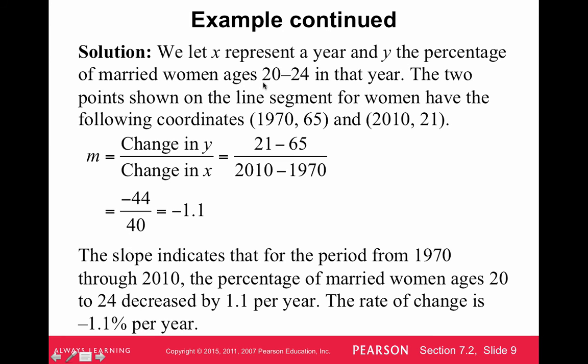So we're going to do the classic formula, y2 minus y1. So here are two points. We have y2, which is 21 minus 65 over x2 minus x1, 2010 minus 1970. So over a period of 40 years, the percentage dropped 44%, which shows a negative 1.1% decrease per year.